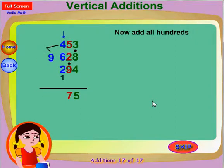Add 3 to 6. You get 9. Add 9 to 4. You get 13. 13 is 10 plus 3. So put a dot on 4 to indicate 10, and write 3 in the hundreds place in the answer.